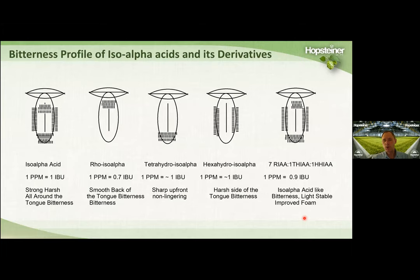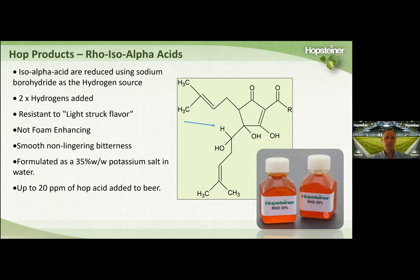We did a project many years ago with a large brewer who wanted to put his beer in a clear bottle but maintain the same bitterness profile as iso-alpha acids. We found that using seven parts rho, one part tetra, and one part hexa produced a beer with a bitterness profile similar to iso-alpha acids, but it was light stable and had better foam and lacing than his regular beer.